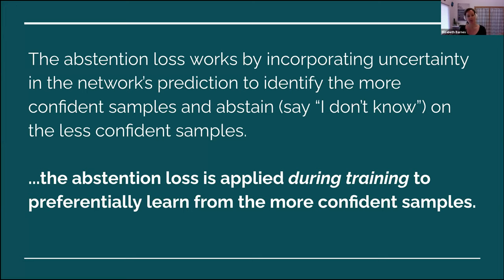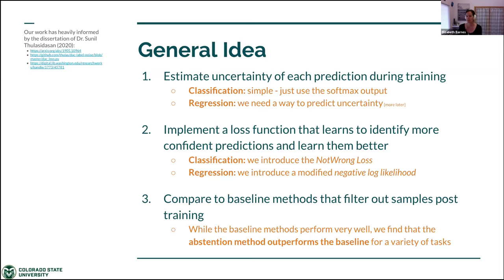There are many different ways of incorporating uncertainty into machine learning training. We don't claim to be the first, but we're trying to put a slightly different tweak on it in the way we think about our geoscience problems. Specifically, the abstention loss is applied during the training process, rather than after the fact, to preferentially learn from the more confident samples.